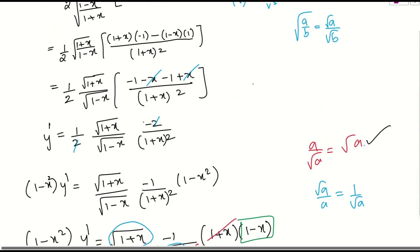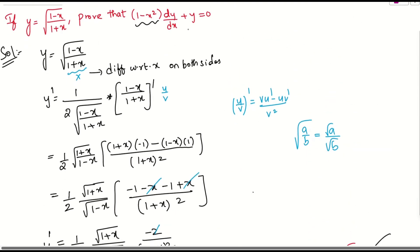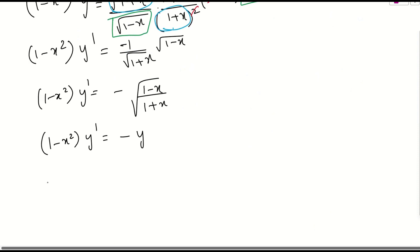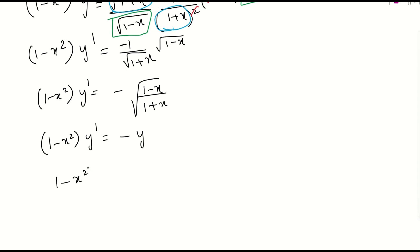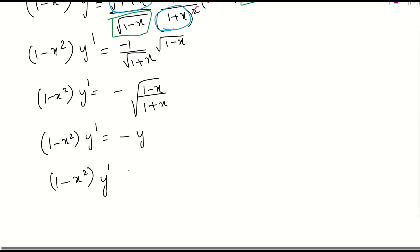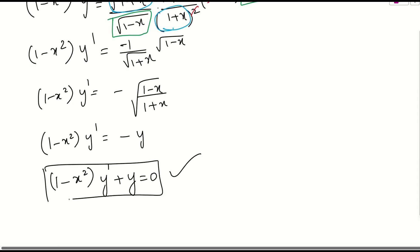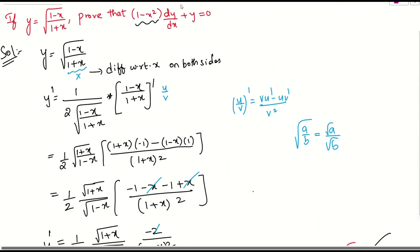What you want to show is that (1 minus x squared) into y dash plus y equals 0. Simply, we got it: (1 minus x squared) into y dash — moving the negative term to the left side — plus y equals 0. This is exactly what they asked us to prove. Hence proved.